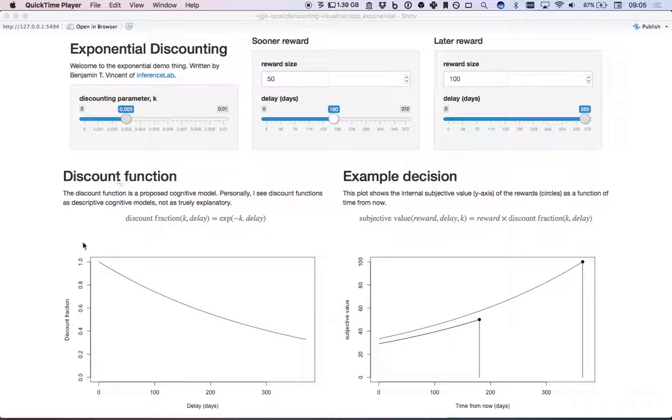What we have on the left here is what we call our discount function. This particular one is an example of the exponential discount function, and there are many others you could possibly look at. Many discount functions will essentially describe the proposed way that the value of a reward decreases as time progresses, as the delay increases.